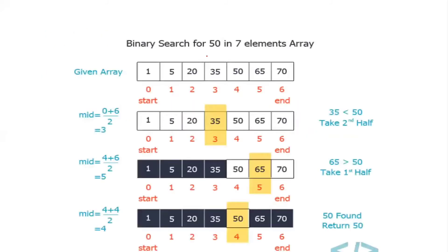Next, we will look at binary search with an example — searching for element 15. There are seven elements, so the index runs from zero to six. Binary search is always performed on a sorted list, and the list shown is sorted in increasing order.